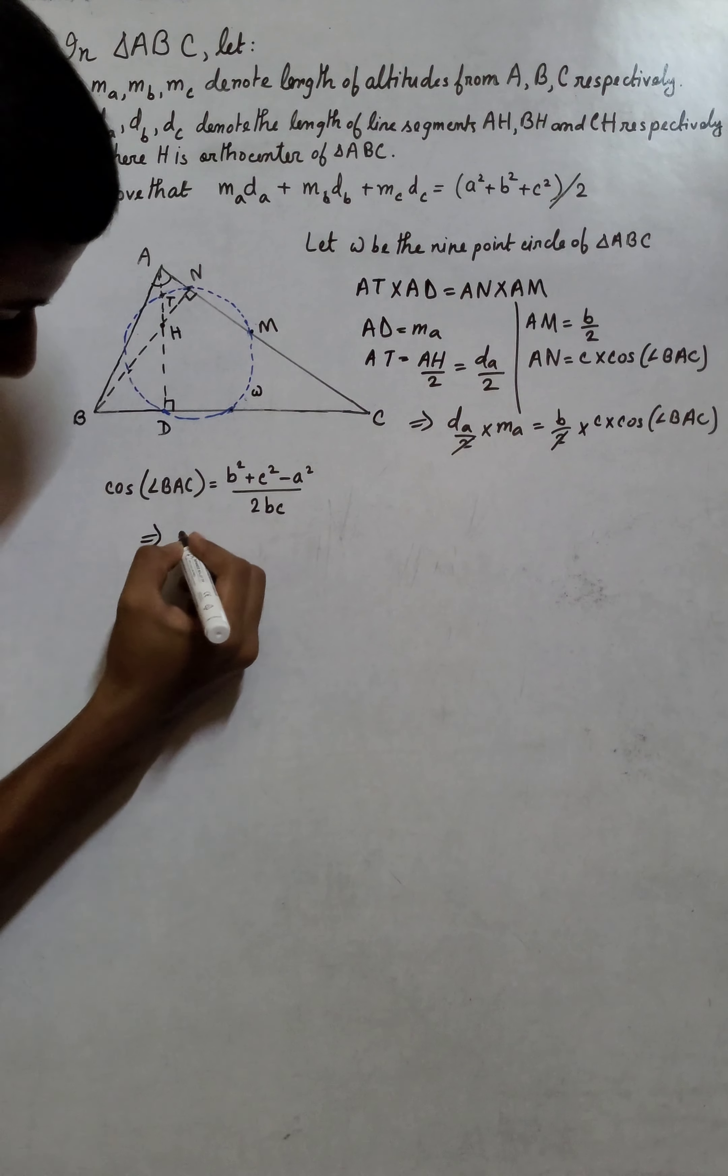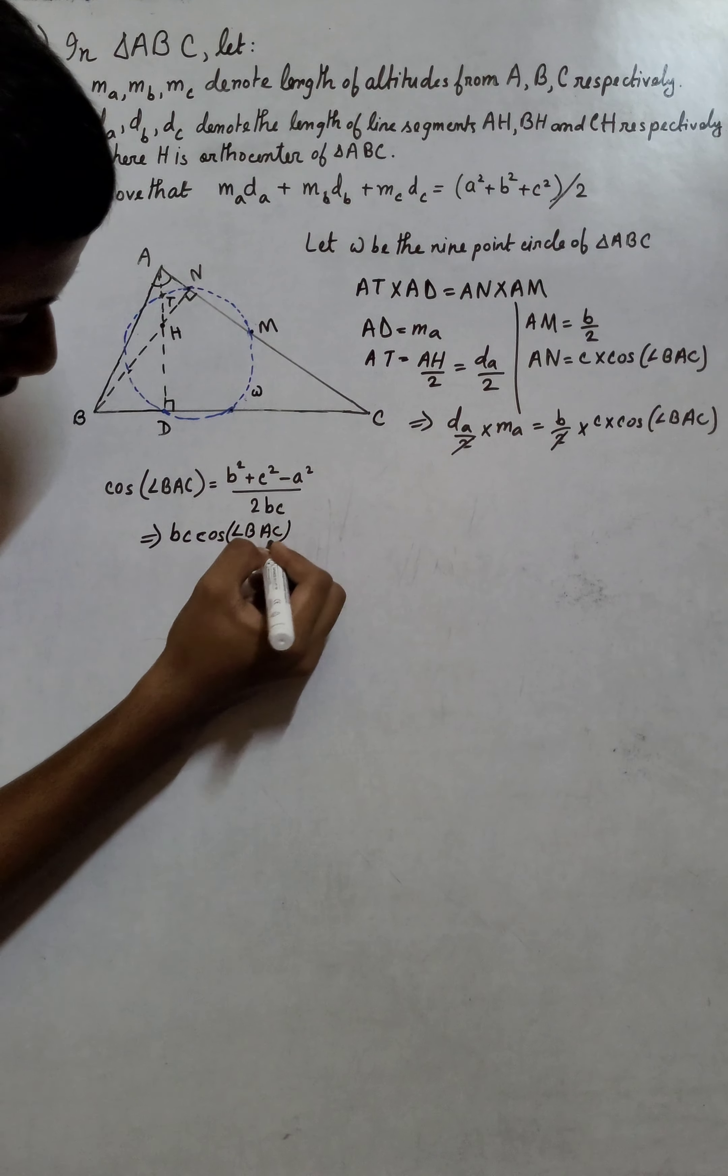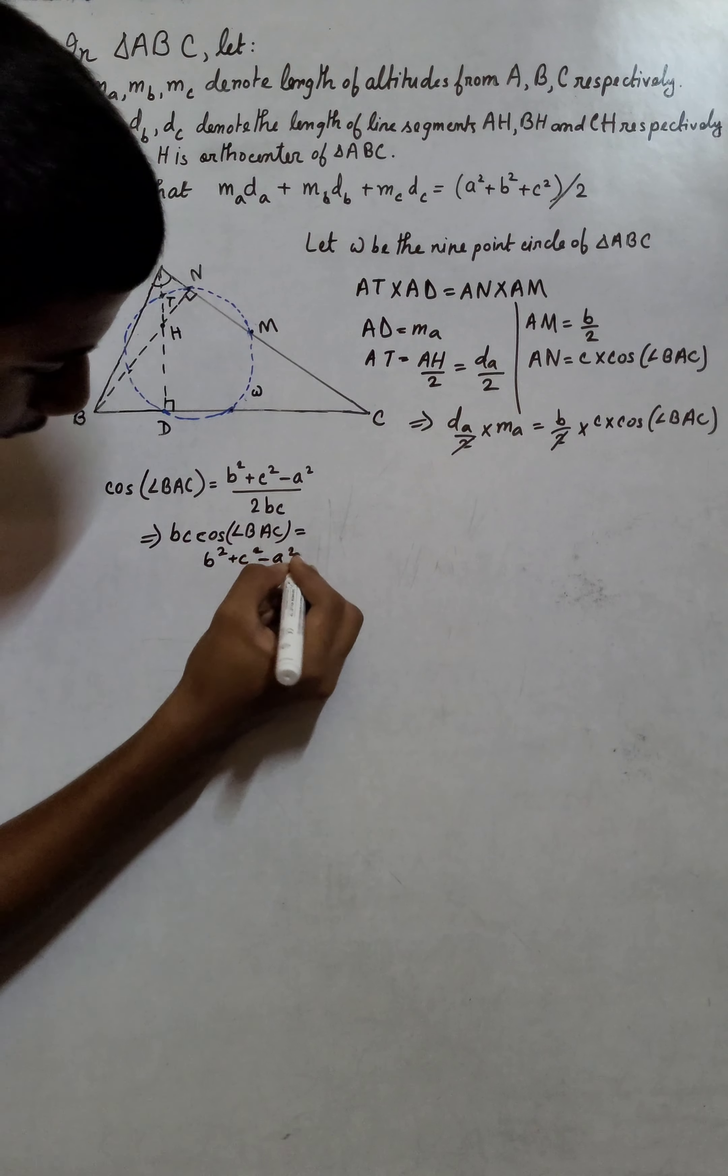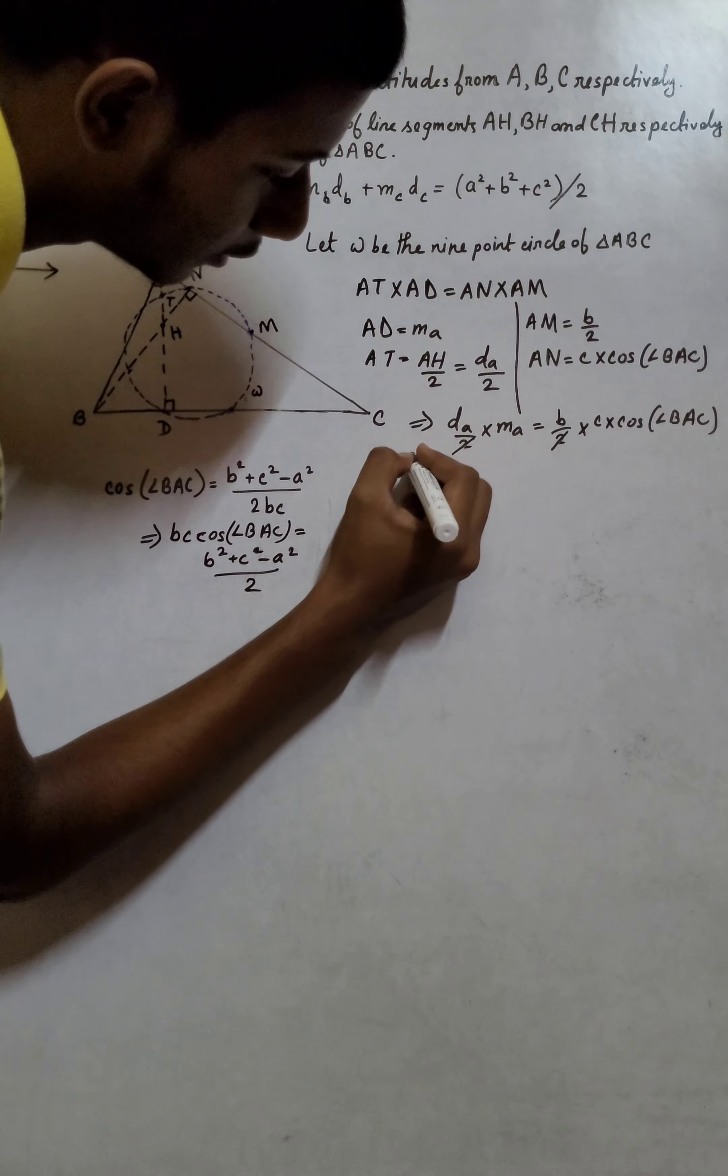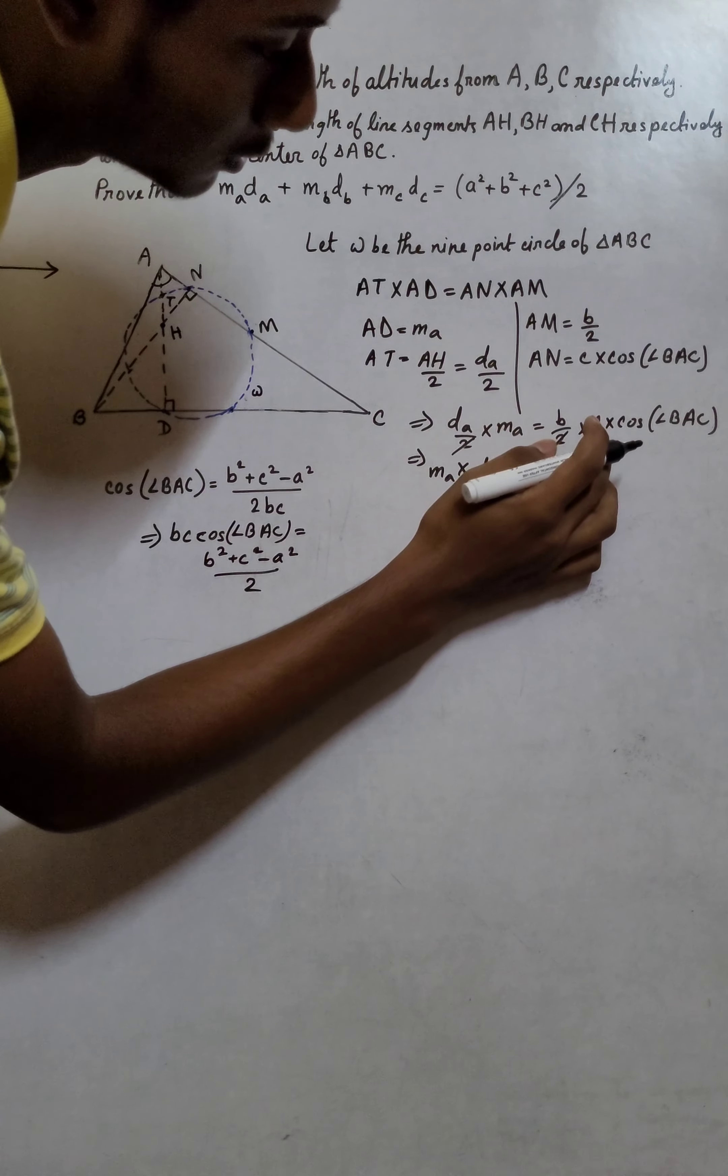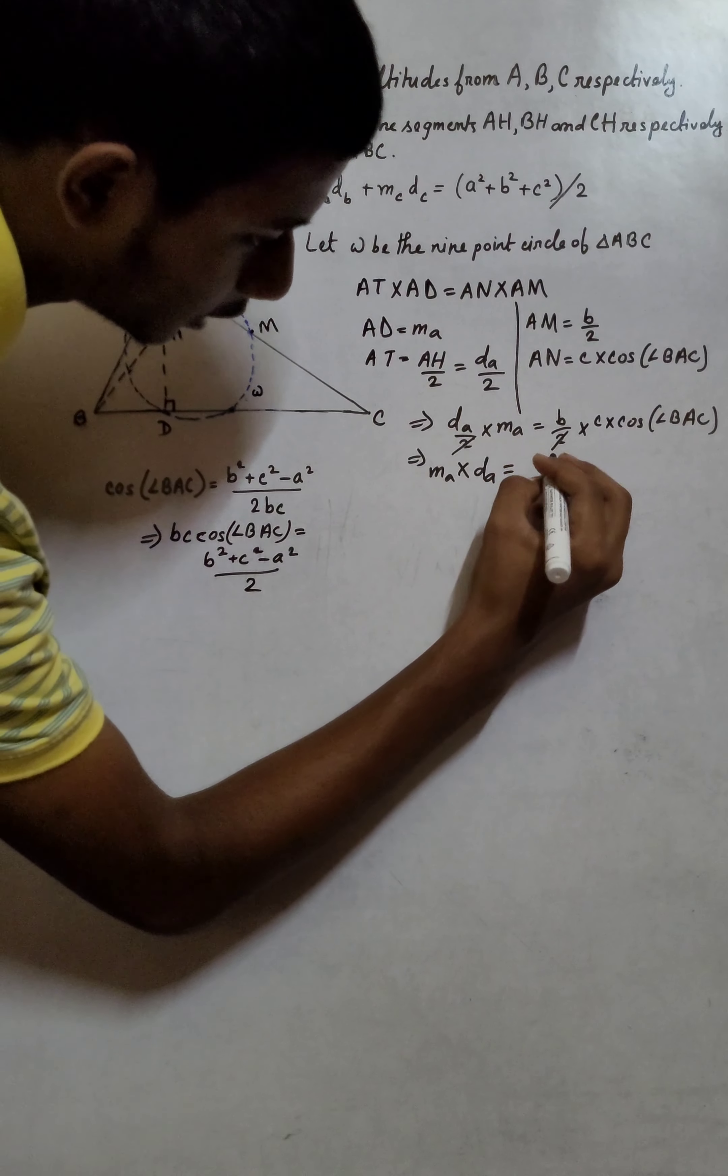Simplifying this, we get BC times cos(angle BAC) equals (B² + C² - A²)/2. We observe that MA times DA equals BC cos(angle BAC), which equals (B² + C² - A²)/2.